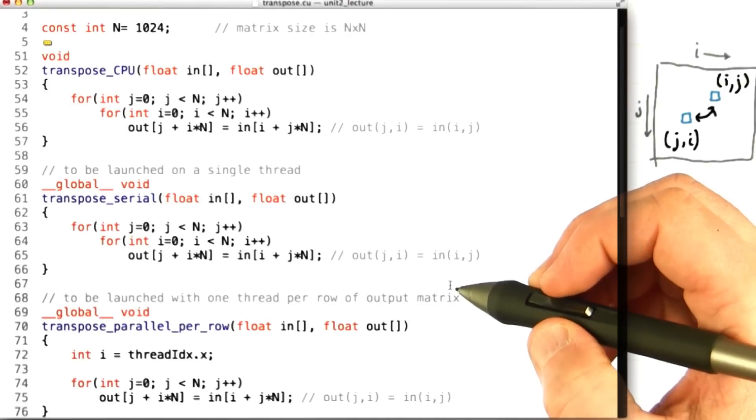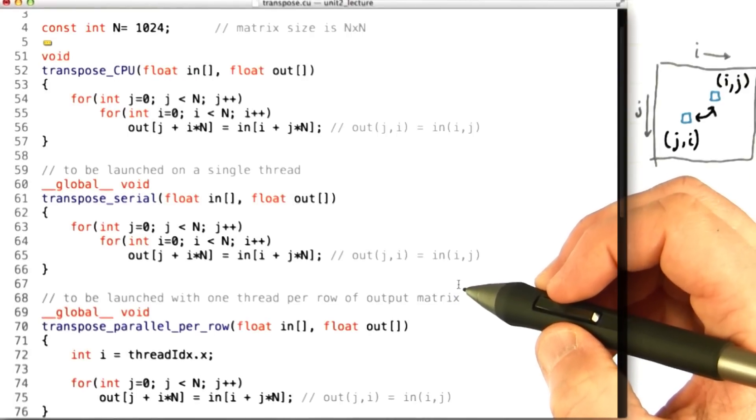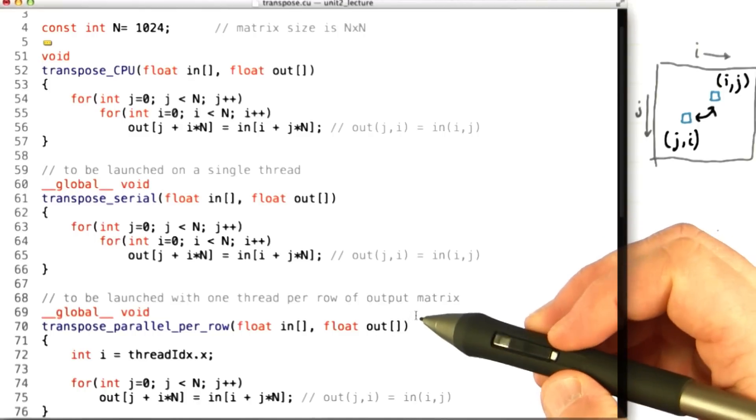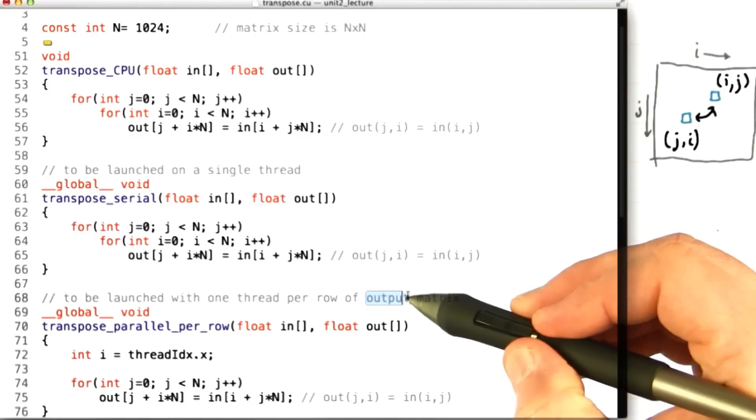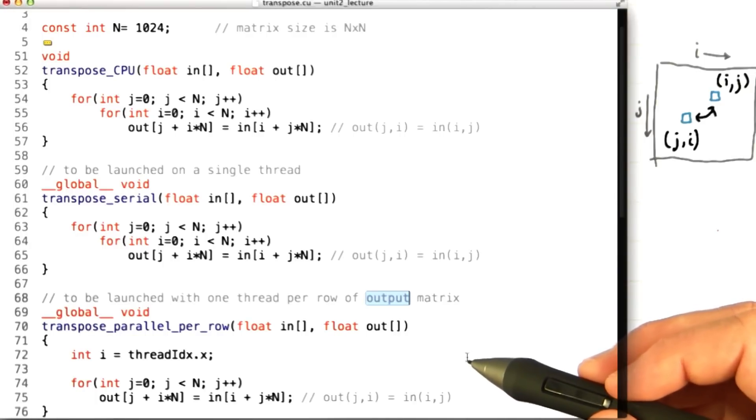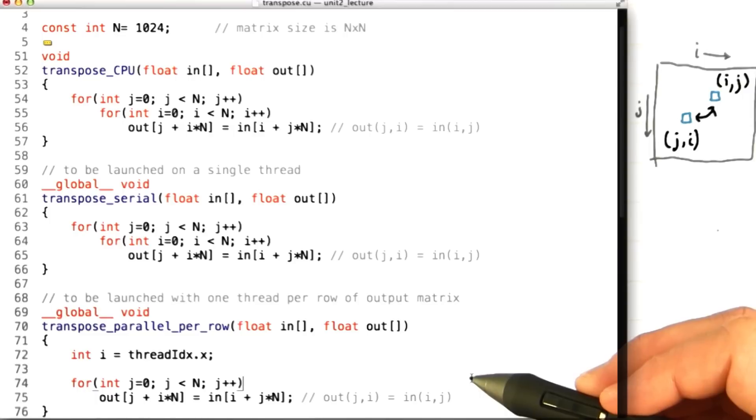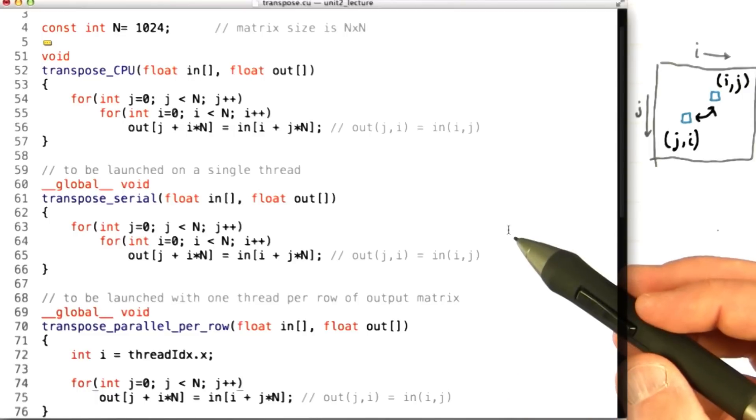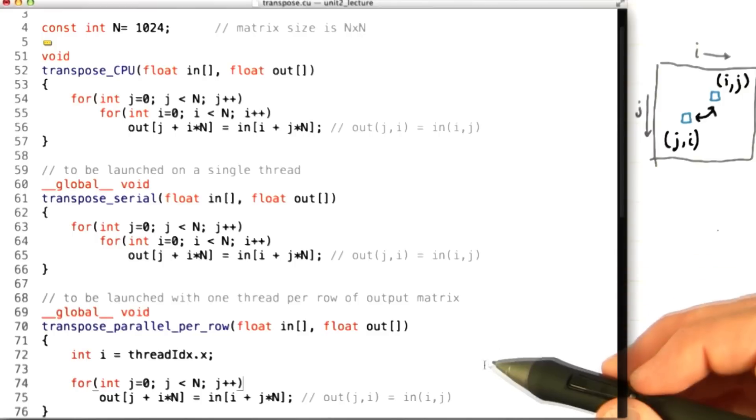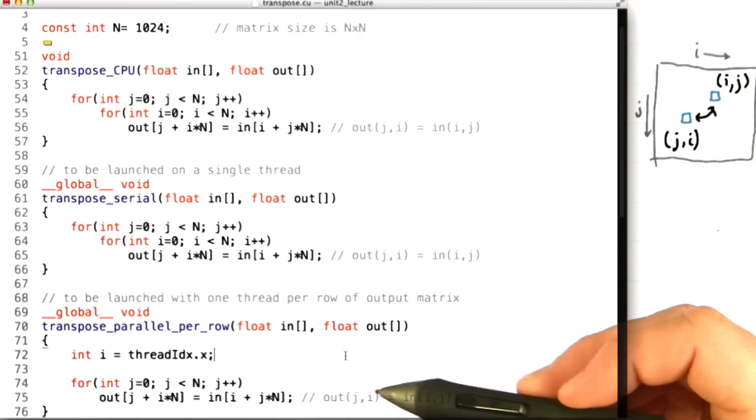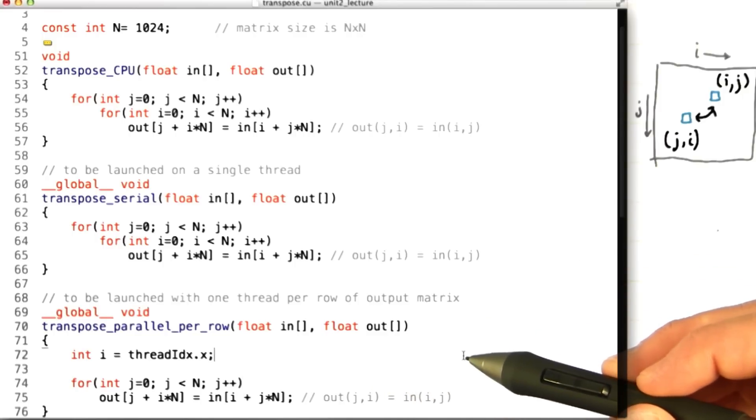Now one easy step would be to launch one thread for each row of the input. Okay, so now here's the code that does that. In this code we're going to launch one thread per row of the output matrix. So the value of i is going to be fixed by the thread ID, and every thread is going to execute just the outer loop of this code we saw before, and the inner loop we're essentially handing off to be run across many different threads. So these two codes are almost identical, and the only difference is that we're launching threads instead of looping over values of i.